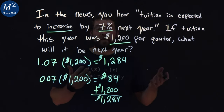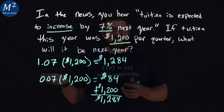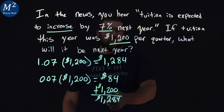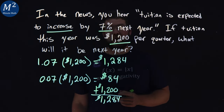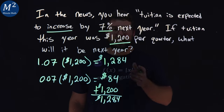So our answer is: what will the price be next year? The tuition for the quarter will be $1,284. Thanks for watching.